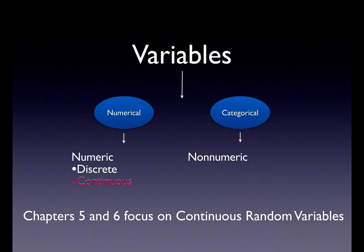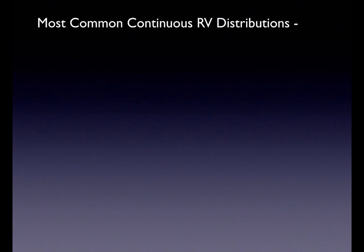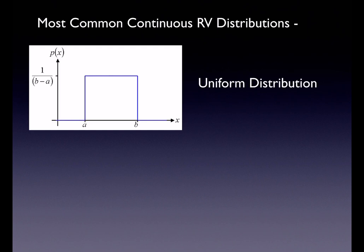Now let's take it over and look at continuous numerical variables — that's what we looked at in chapters 5 and 6. Chapter 5 was the uniform distribution, and chapter 6 was the standard normal and then the regular normal curve. With those distributions, instead of making a table, we're going to make a graph. The most common one is the uniform distribution.